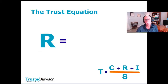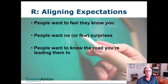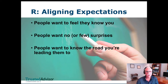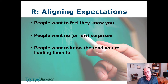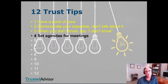Let's talk about reliability. This one has to do with actions and aligning expectations. People want to feel there are no surprises — they get where you're coming from, the way you think about things. So here's a tip: set agendas for meetings. It may sound basic, but you should do it almost every single time, whether it's a 15-minute phone call or an all-day meeting.